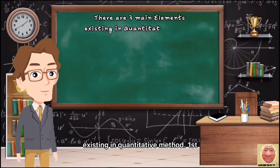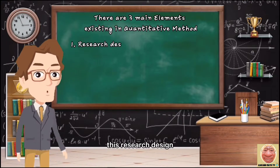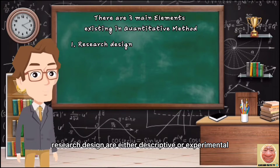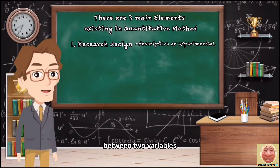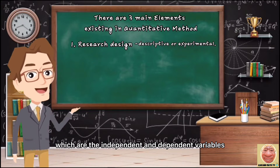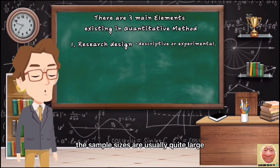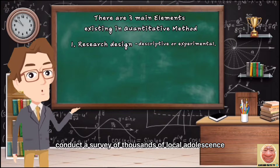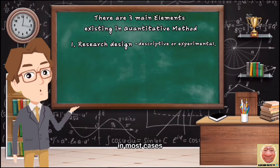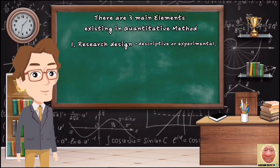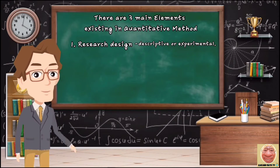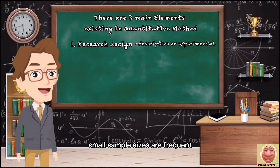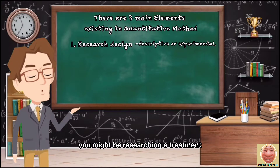There are three main elements existing in quantitative method. First is research design. Research designs are either descriptive or experimental. Descriptive designs are used to assess the relationship between two variables — the independent and dependent variables. Sample sizes are usually quite large; for example, conducting a survey of thousands of local adolescents, and subjects are only measured once. Subjects that are frequently measured before and after a treatment use an experimental design, where causality is examined and small sample sizes are frequent — for example, researching a treatment for a small group of COVID patients.